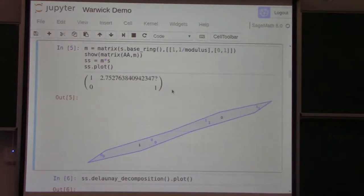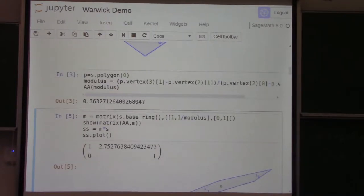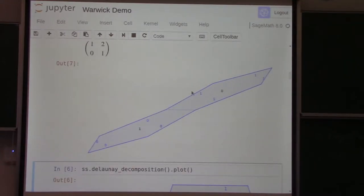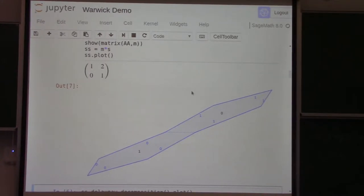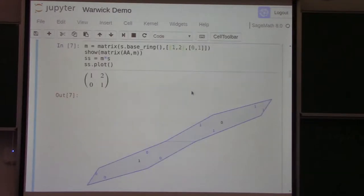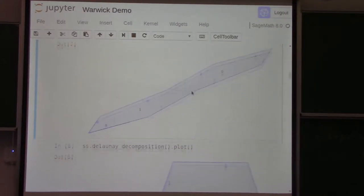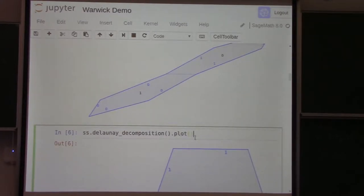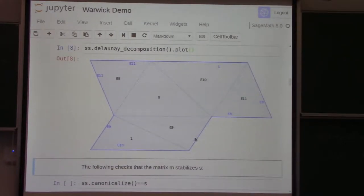So what you could do is you could maybe change my matrix by a little bit. Like, right. So instead of using this matrix, I could use, I don't know, what if I put two here? And that's not going to be an automorphism of this surface. And now I get this other surface. And then when I compute the Delaunay decomposition, it'll actually be a triangulation. So most likely it's a triangulation. Yeah, so there's a Delaunay triangulation.